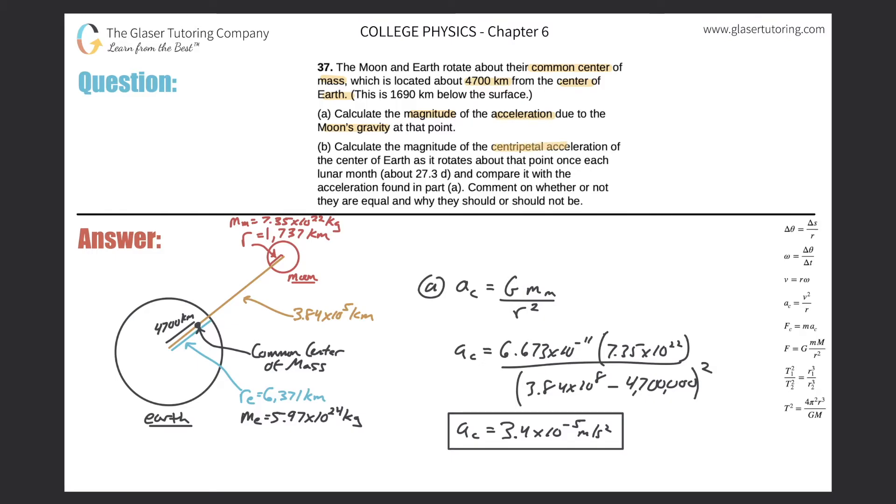It says calculate the magnitude of the centripetal acceleration of the center of the earth as it rotates about that point, meaning the point of common mass, once each lunar month, which is about this many days, and compare it with the acceleration found in part A. So basically what this is asking—here's the center, here's the common center of mass, and this whole system rotates about this common center of mass. So the center of the earth will make this trajectory.